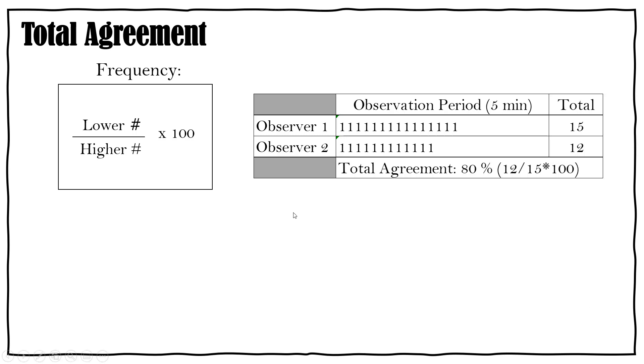With frequency, remember if you're using frequency it's possible that you would be doing an event recording system. So you have your observation period and every time the behavior occurred during your observation period you're going to put a little tally mark. Now you're going to have two observers. So observer one within a five minute period tallied 15 marks and observer two recorded 12. What you're going to do is put the lower number divided by the higher number and multiply by 100. So for this example you're going to do 12 divided by 15 times 100 and you're going to get that percentage score, and in this example it was 80% so we're good.